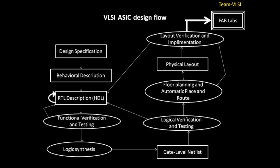All these stages are broadly divided into two parts. The first is front-end: from design specification until logical verification. The second is back-end: from floor planning and automatic place and route until layout verification. This is the basic design flow in VLSI ASIC. In the next lecture we will see the ASIC design flow in more detail. Thank you.